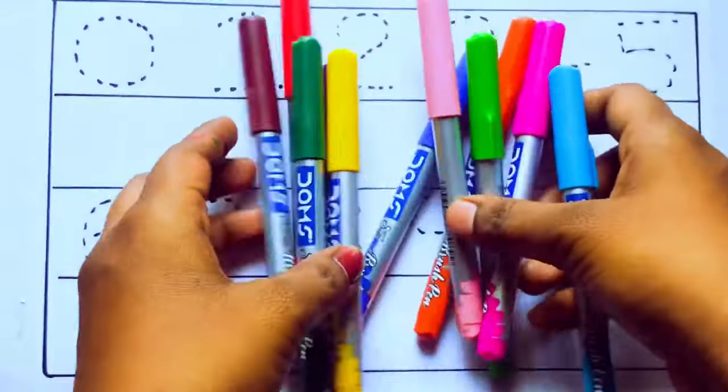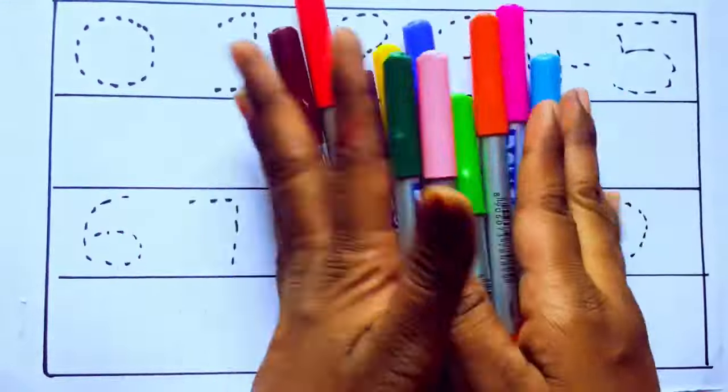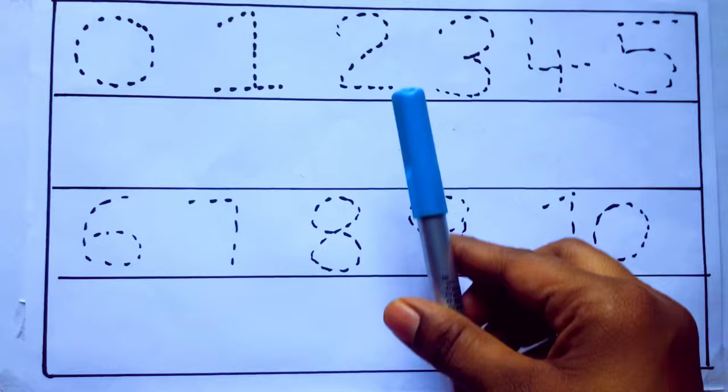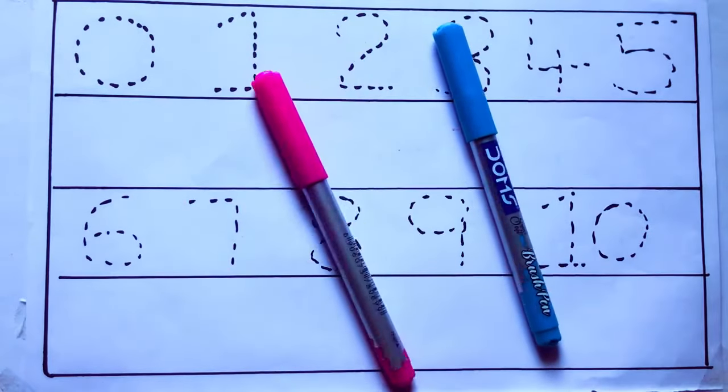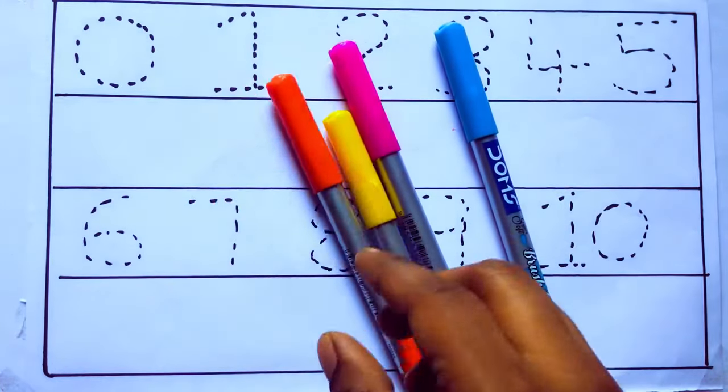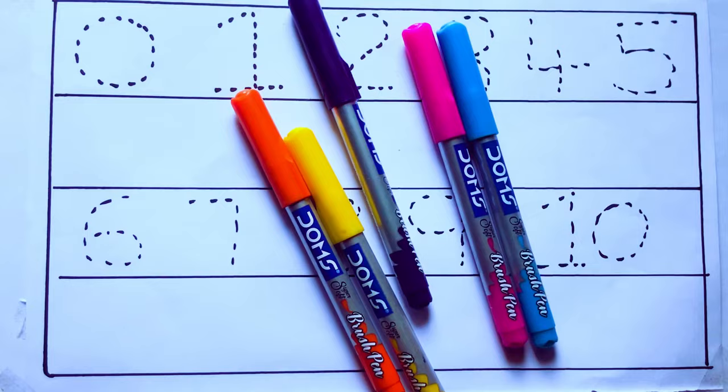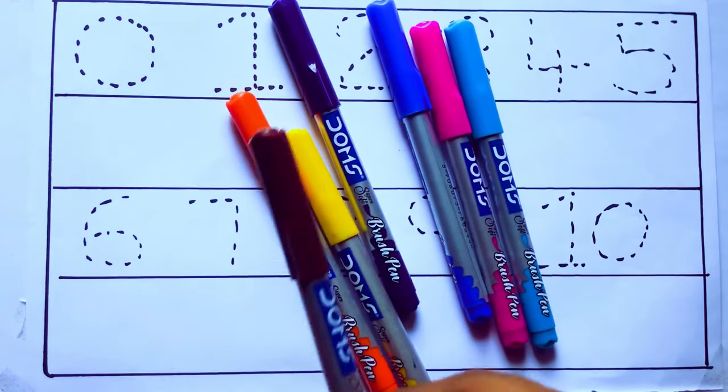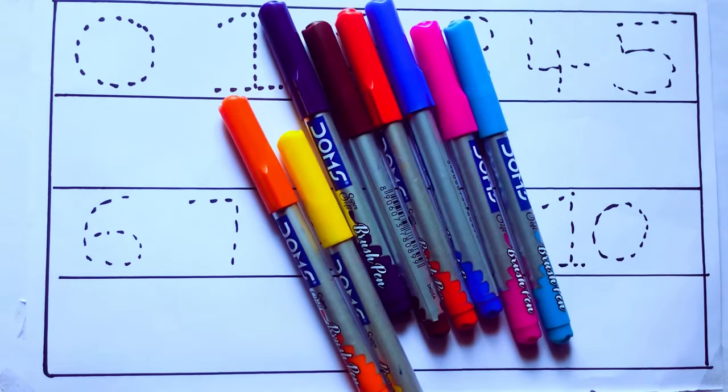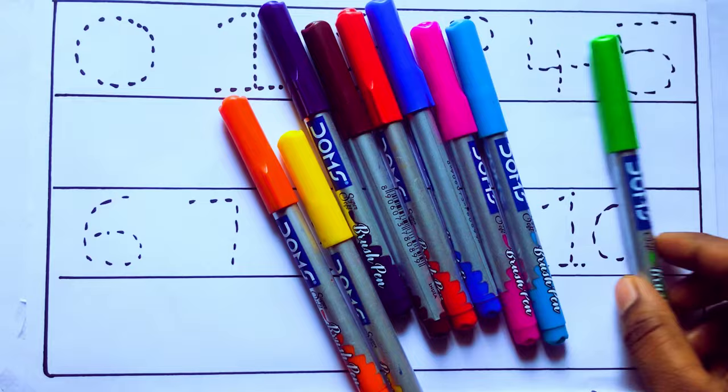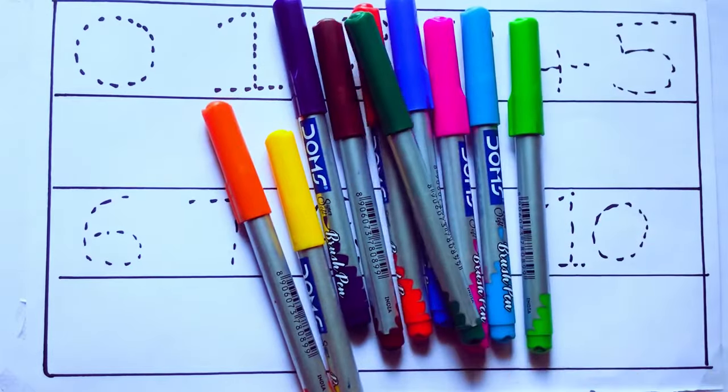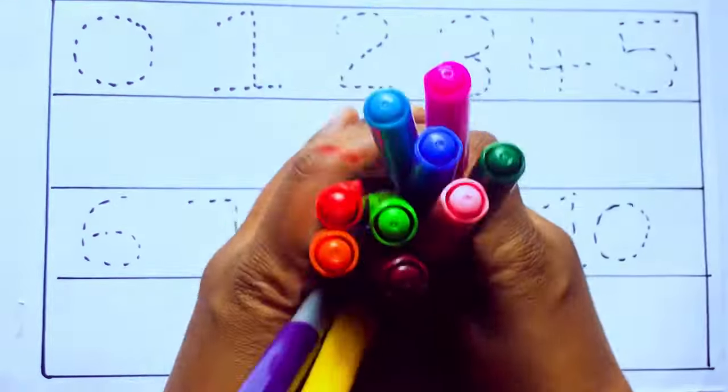Let's learn some colors. These are all the color pencils. Let's learn the names: sky blue color, pink color, yellow color, orange color, violet color, blue color, brown color, red color, green color, and pink color.